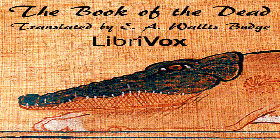Though the chapters of the Book of the Dead represent beliefs belonging to various periods of the long life of the Egyptian nation and opinions held by several schools of thought in Egypt, the object of them all was to benefit the deceased. They were intended to give him the power to have and to enjoy life everlasting, to give him everything which he required in the life beyond the grave, to ensure his victory over his foes, to procure for him the power of going whithersoever he pleased, and to preserve the mummy intact.